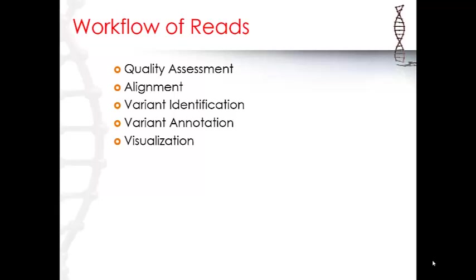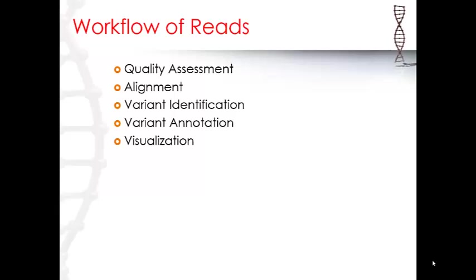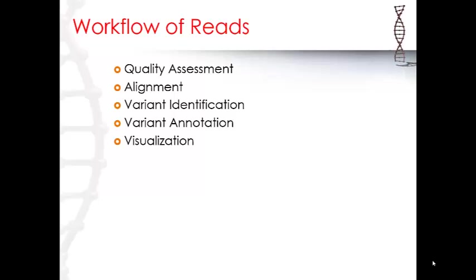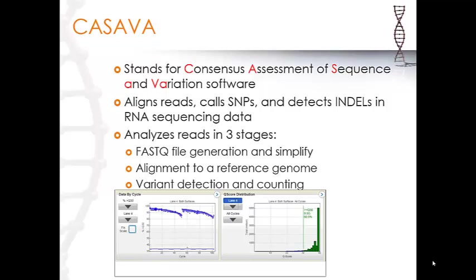The process that RNA-Seq goes through in order to get an accurate result involves quality assessment, alignment, variant identification, variant annotation, and visualization. We will talk about this in future videos.